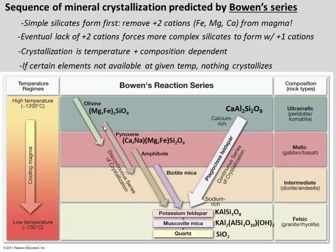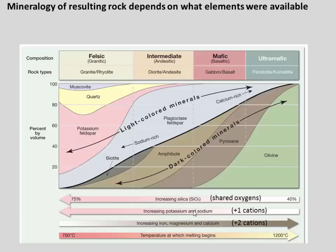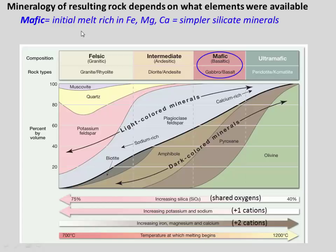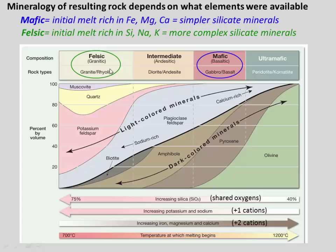Depending on your initial magma composition, you're either going to be left with a rock that tends to be mafic — if you mostly crystallized out mafic minerals — or one that might be felsic if you mostly crystallized out things like quartz and feldspar. Mafic rocks tend to crystallize from magmas rich in iron, magnesium, and calcium, and have simpler silicate minerals like olivine and pyroxene. Felsic rocks are richer in sodium, potassium, and silica, dominated by more complex silicate minerals, with more +1 cations, whereas mafics are rich in iron, magnesium, and calcium — more +2 cations.